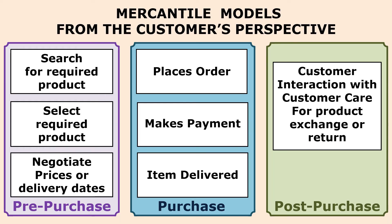In summary, purchasing products consists of three phases. In the pre-purchase phase, people look for the required product using a text-based or voice-based search facility, then select the required product based on features and price. Some people also negotiate with the seller for a price discount or request a change in delivery dates.